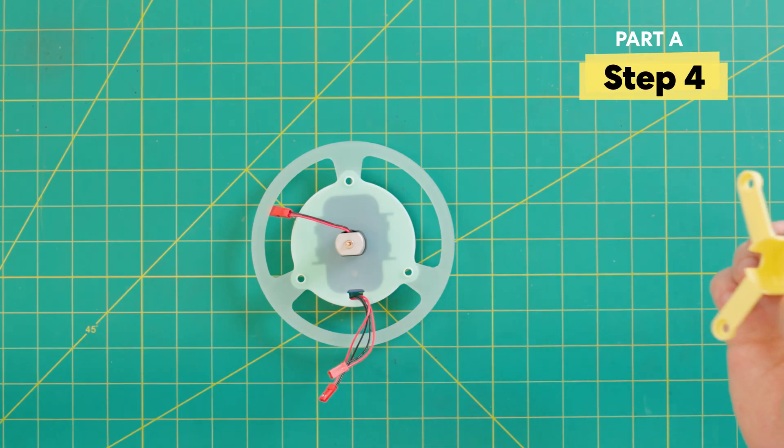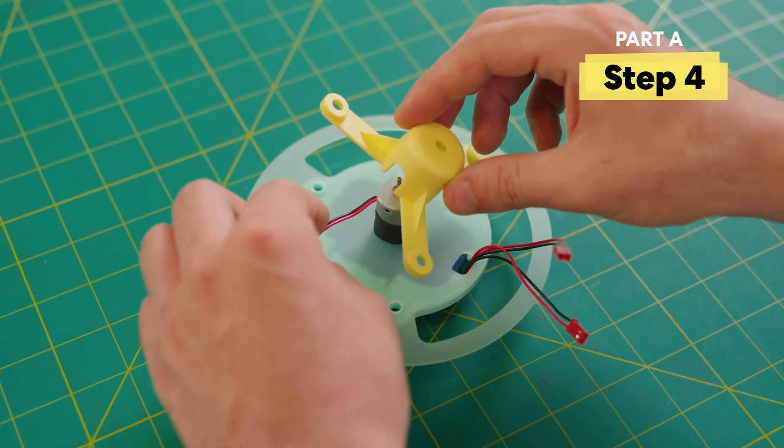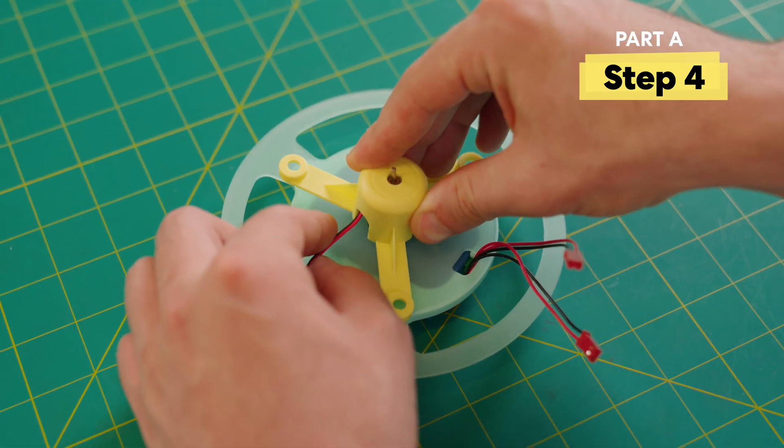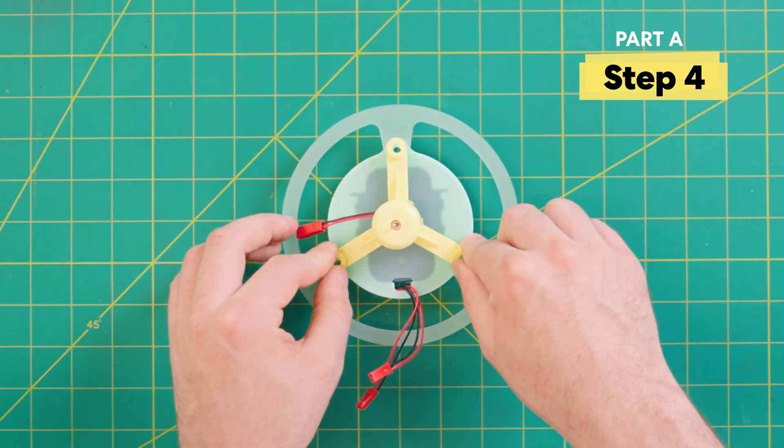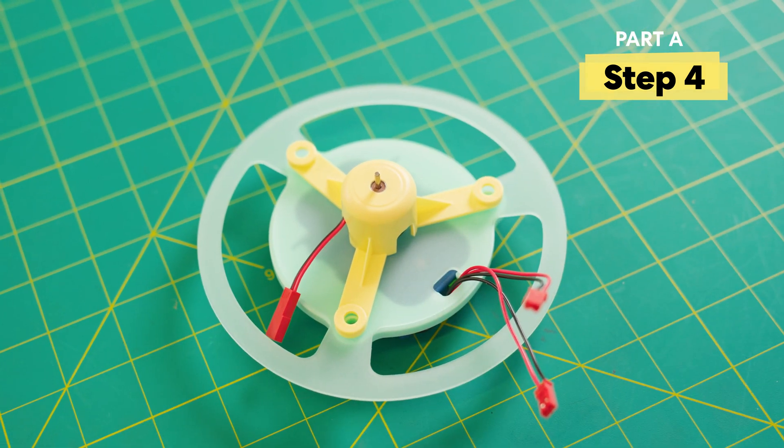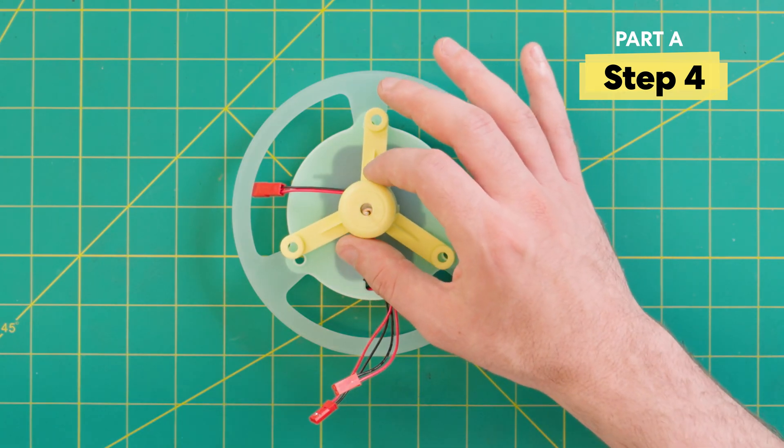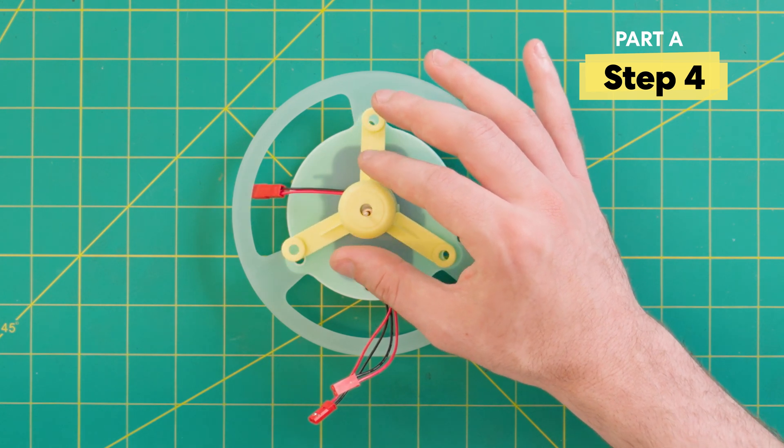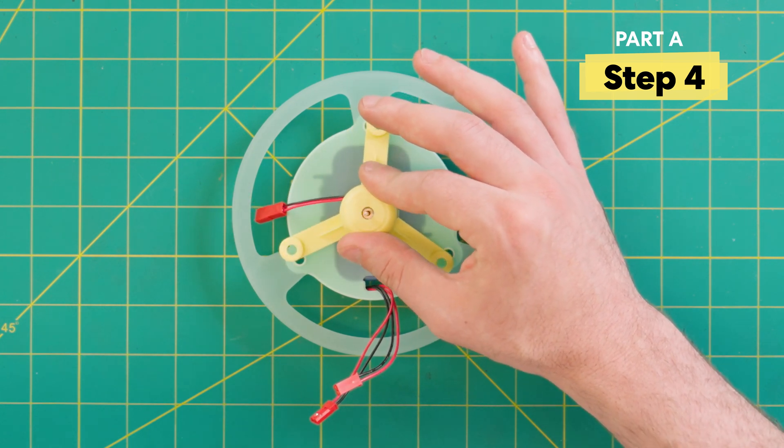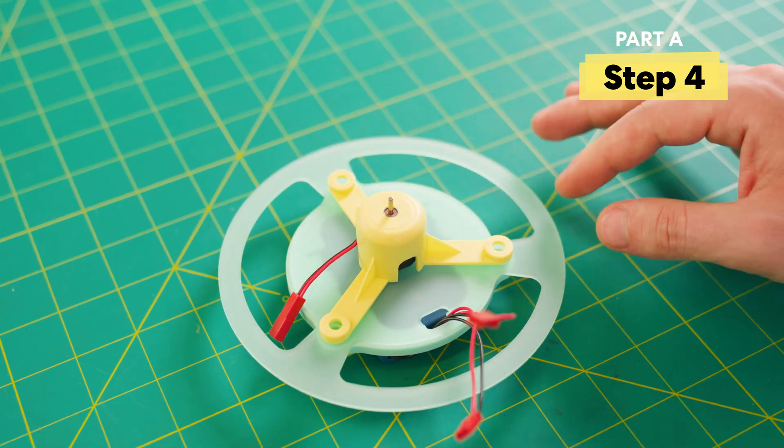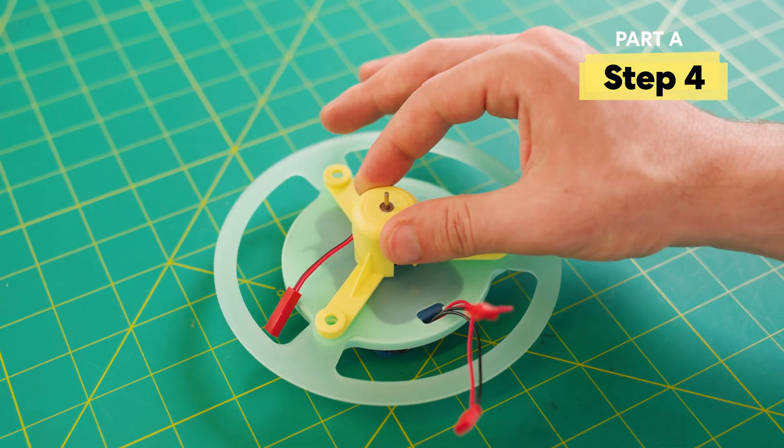Next, we're going to grab this yellow cover and place it over here. Make sure that this wire is out of the way. Make sure all the holes are aligned and the yellow piece is securely connected to the motor. If your yellow cover is a little loose like this, then it's not fully on. You don't want it to be moving like that. You want to click it in and have it not be able to move in that way.